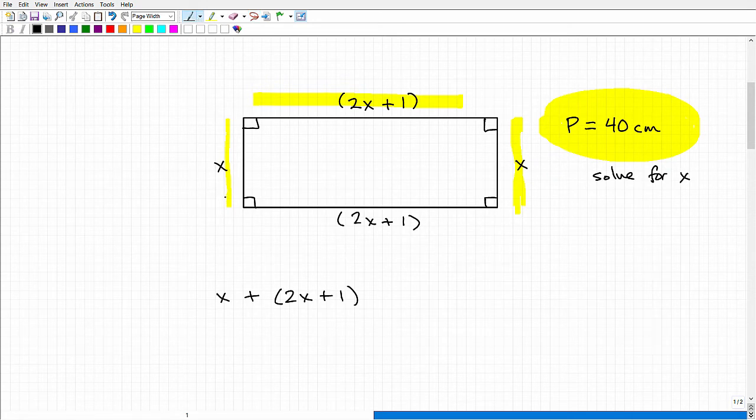We need to add up all four sides. We have x, 2x plus 1, another x, and that final length of 2x plus 1. By definition, the sum total of all four sides is the perimeter, which was given as 40 centimeters. We'll put in 40.